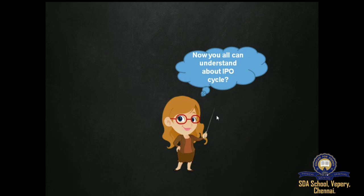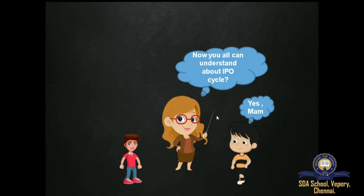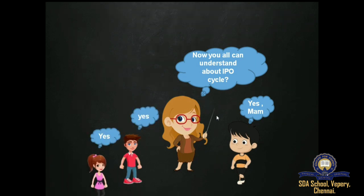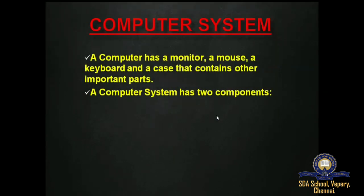Now you all can understand about the IPO cycle. Next, we move on to the topic of computer system. A computer has a monitor, a mouse, a keyboard, and a case that contains other important parts. A computer system has two components: hardware and software.